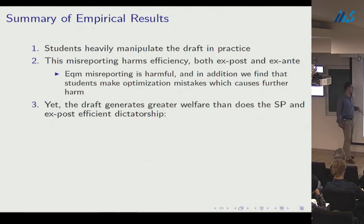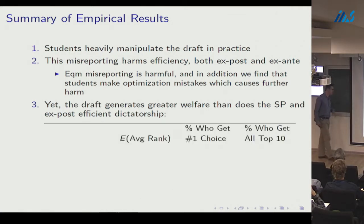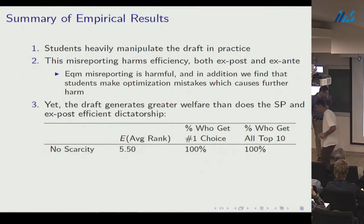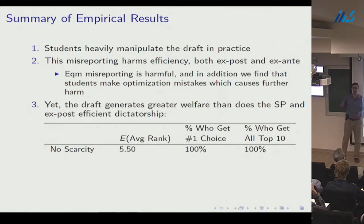Nevertheless, the draft looks better on simple measures of ex ante welfare than the strategy-proof and ex post efficient dictatorship. In an economy without scarcity, with bundles of ten courses, I'd get courses ranked 1 through 10 — average rank 5.5, 100% of students get their top choice and bliss point bundle.